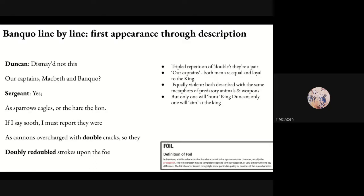Both men are described with the same metaphors — eagles and lions, predatory animals — and both are described as weapons, specifically as cannons. But with dramatic irony, only one of them will go on to hunt King Duncan. Only one is truly a predator to Duncan; only one will aim their weapon at the king. So: doubles, equals, two people exactly the same in description.